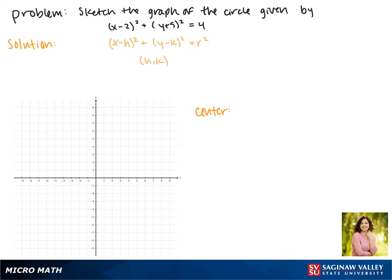That means the center of our circle is the point 2 negative 5.